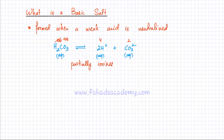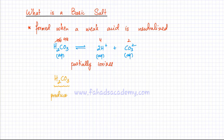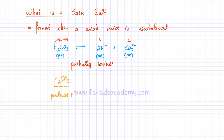Now we're going to look at what happens when a salt is formed from this weak acid. Salts are formed when an acid is neutralized. The reason why H₂CO₃ is an acid is that it is capable of producing H⁺ ions. So if I neutralize it, that means I get rid of all the hydrogen from the acid and replace it with any other positive ions.